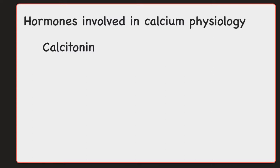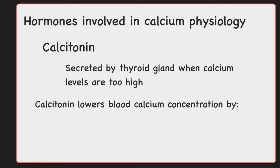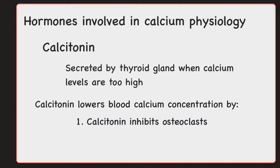Calcitonin is secreted by the thyroid gland when calcium levels are too high. What calcitonin does overall is lower blood calcium concentration. It does this in two ways. First, it's going to inhibit osteoclasts. Remember, osteoclasts are the cells that break down the bone, and when they're actively breaking down the bone, they're releasing both calcium and phosphate into the blood. So if calcium is too high, it makes sense that this hormone is going to inhibit that osteoclast work. If the osteoclasts are inhibited, meaning they're not breaking down bone as much, then that's going to lessen the amount of calcium and phosphate released into the blood.